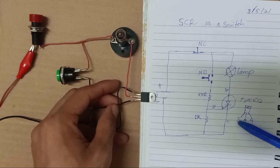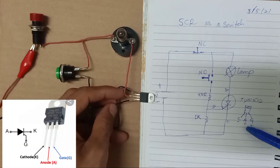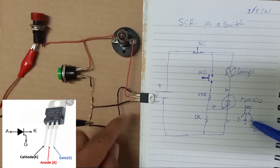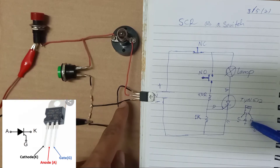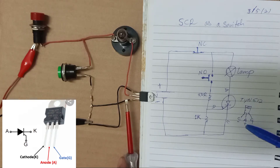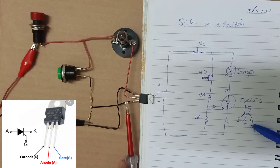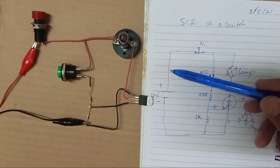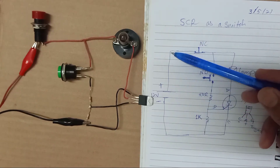The cathode is the minus pin. The one in the middle is the anode, which is the positive. And the last pin is the trigger — the gate. From this battery, the trigger comes here.